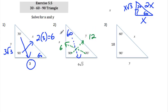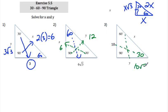Here's another example: opposite to 30 is 10, so opposite to 60 is 10 radical 3, and opposite to 90 is twice the 10, so that would be 20. I'm just following the picture they gave us here.